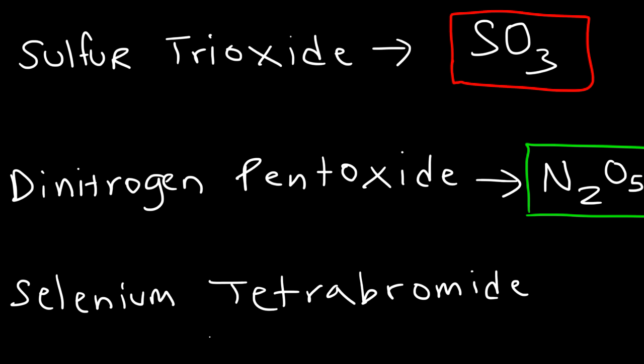Selenium tetrabromide. The symbol for selenium is Se. Tetra represents four, and bromide is associated with bromine. So it's SeBr4. So it's very straightforward when writing the chemical formulas of covalent compounds. So make sure you commit to memory the prefixes and the numbers that are associated with them. You just have to memorize that.